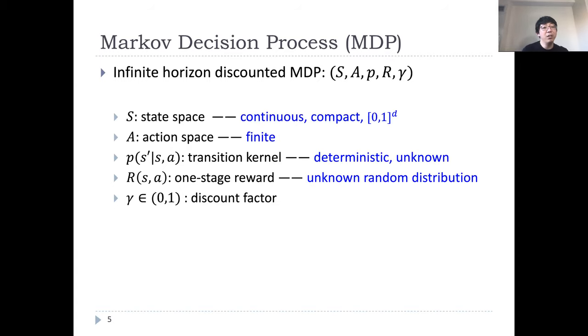And we have a discounting factor gamma within 0 and 1. Particularly in this talk, we will be focusing on continuous compact state space. And without loss of generality, we assume that the state space is a d-dimensional cube. And we have a finite action space. The transition kernel is deterministic and unknown, and the reward is an unknown random variable.